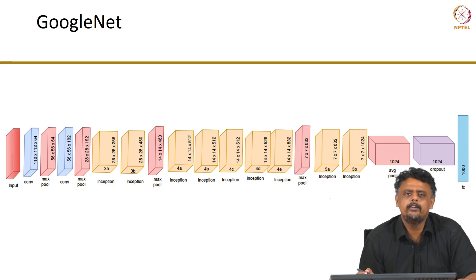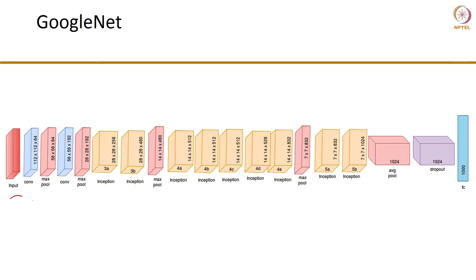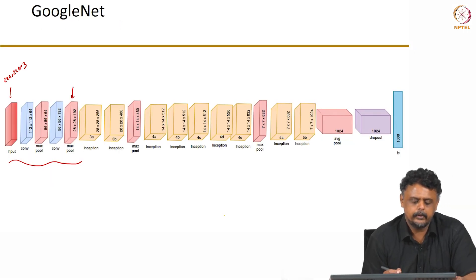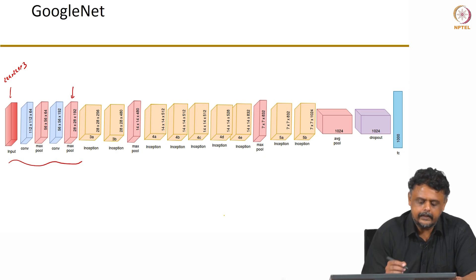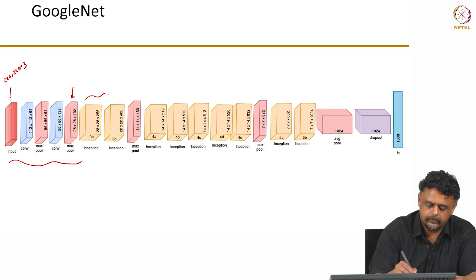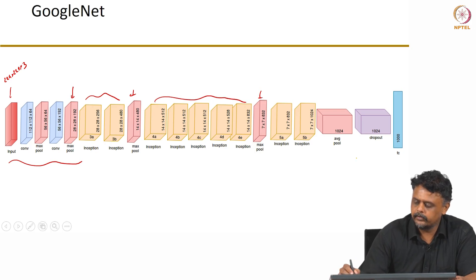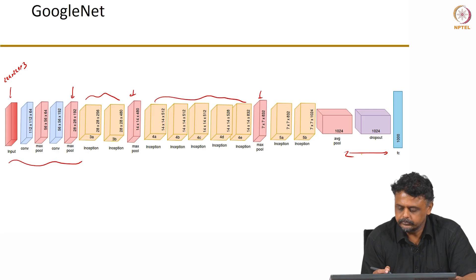Looking at the network, it had about 22 layers with weights, with an initial set of convolutions and max pooling which reduce the size of the input to 28x28x192. The input as usual was 224x224x3, followed by a sequence of convolutions and max pooling to get to 28x28x192. That was then used as input to a sequence of inception layers followed by max pooling, and so on until we have the typical output layer with 1000 activations.